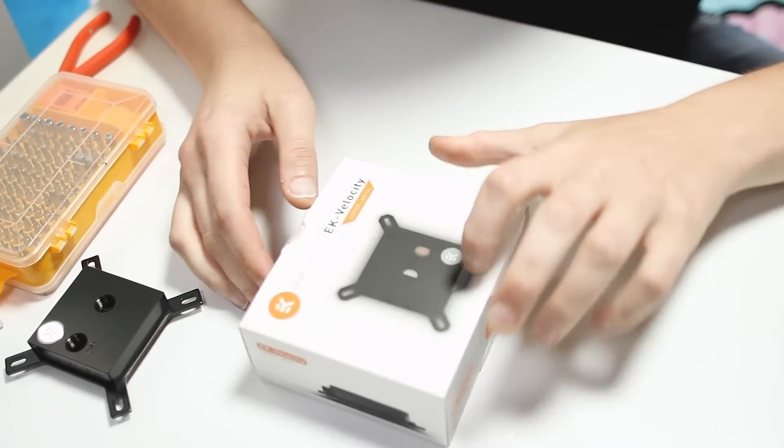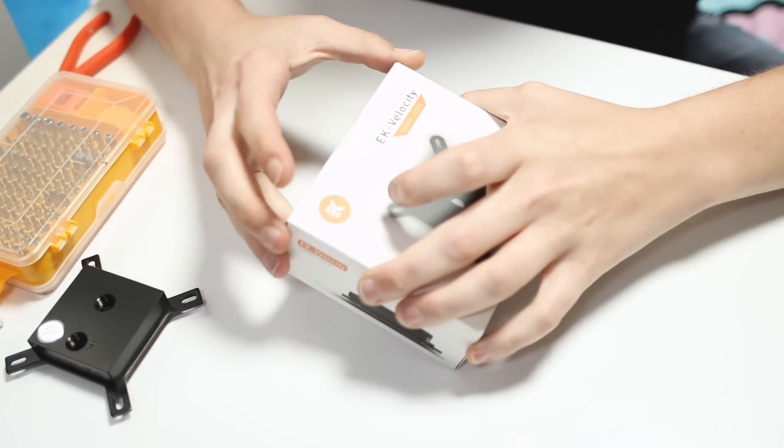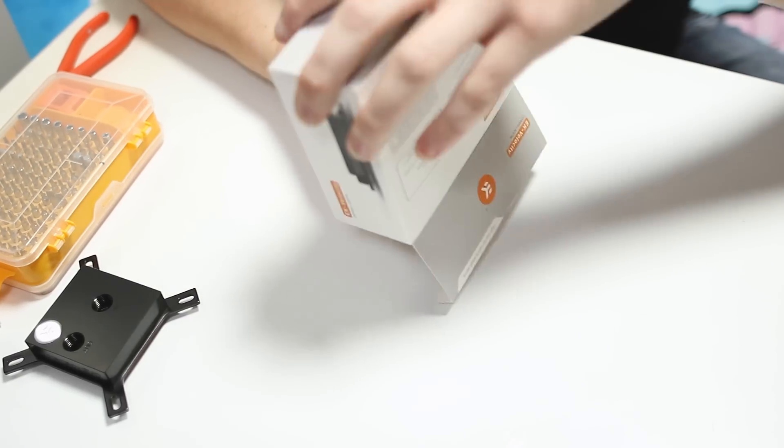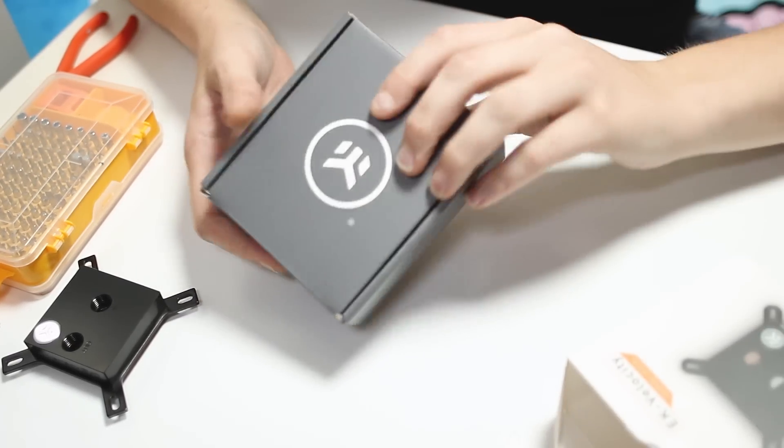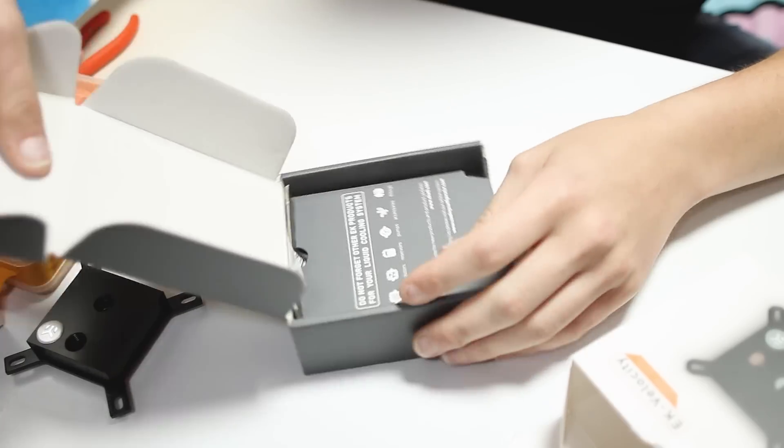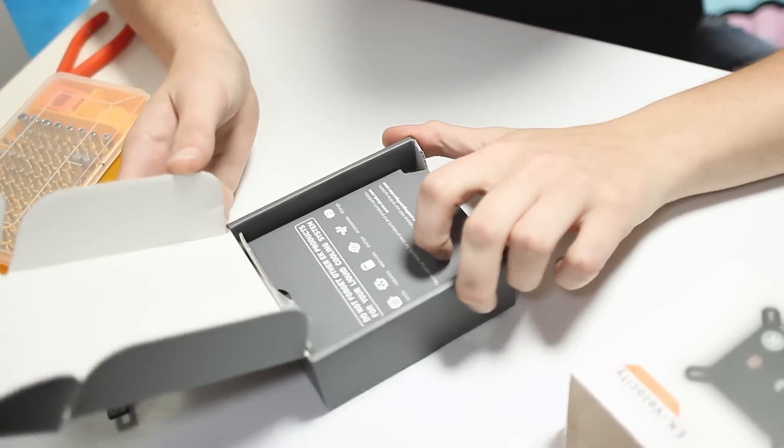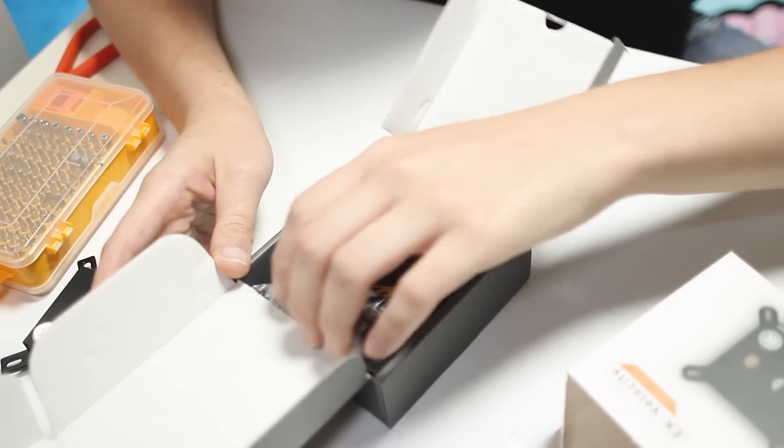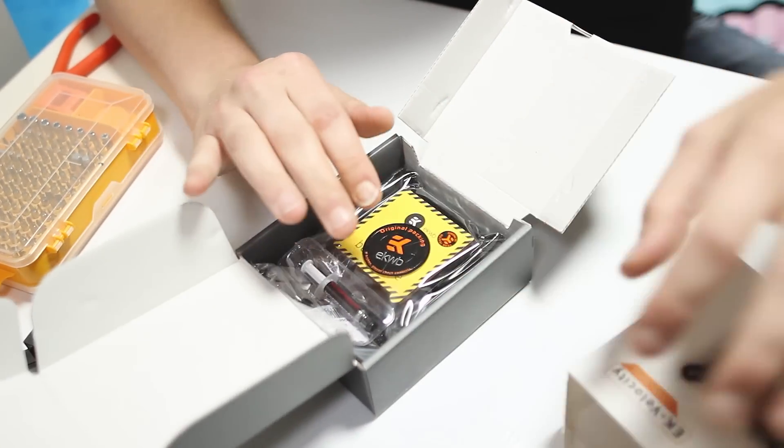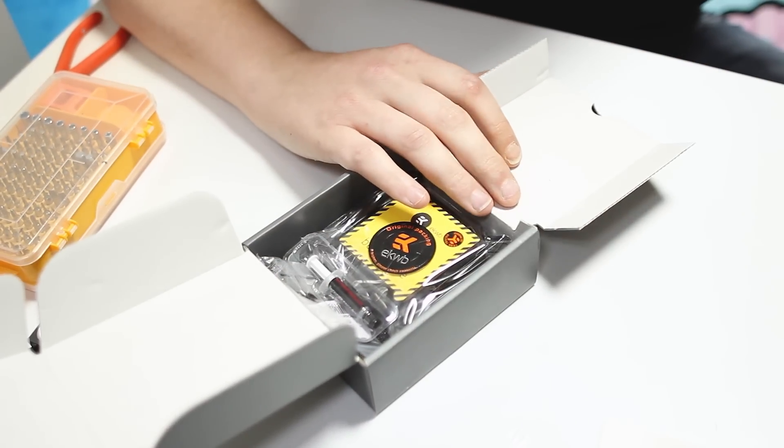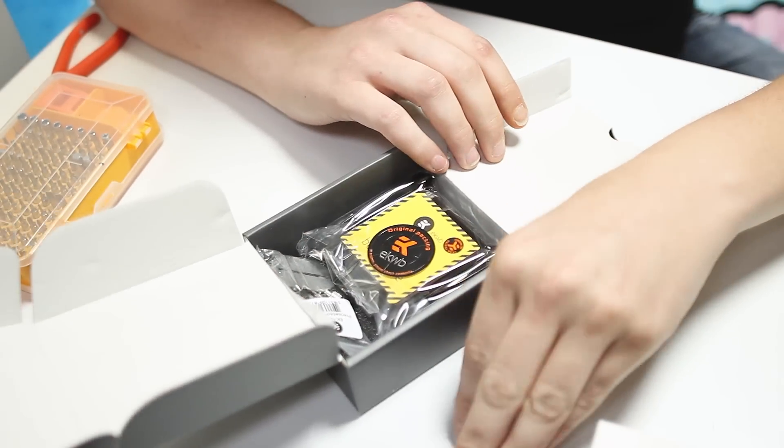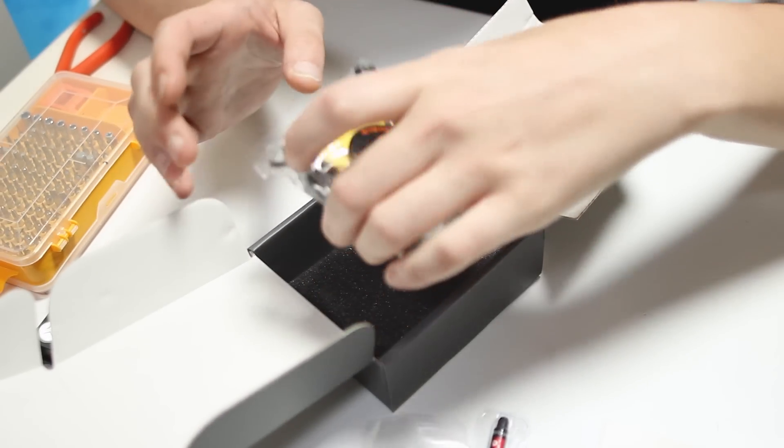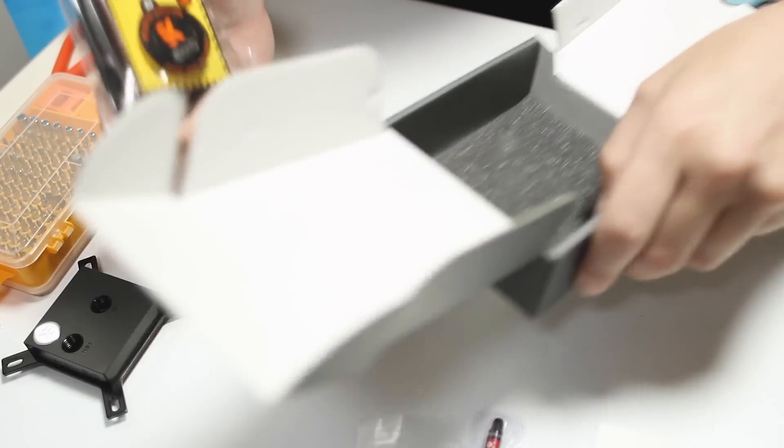Here we have the Velocity block. First things first, the new Velocity block, they have either Intel mounting, Threadripper mounting, or AM4 mounting options. So they don't come with a universal bracket.